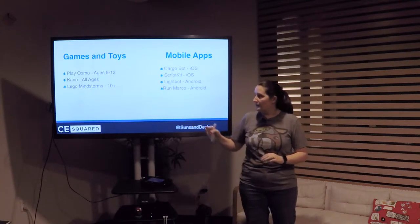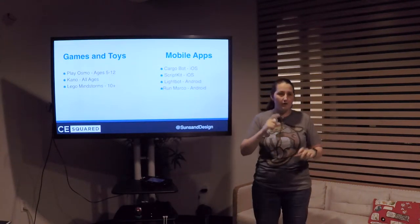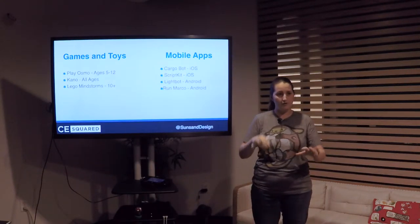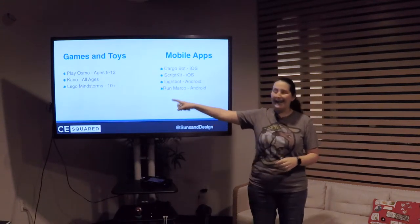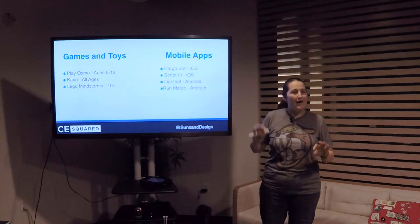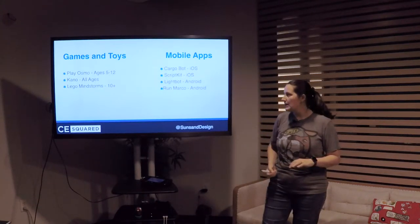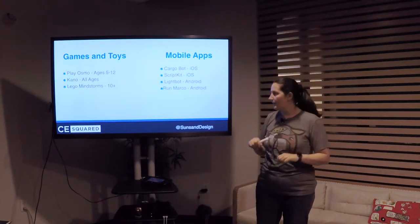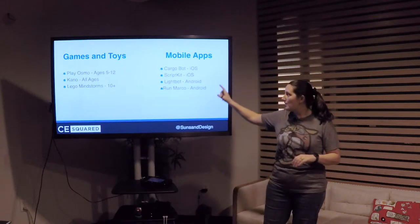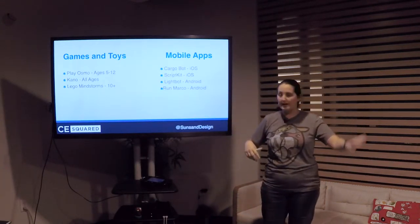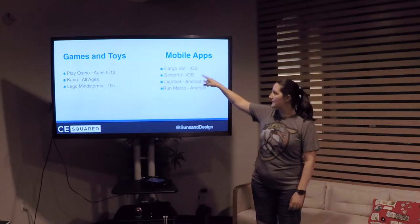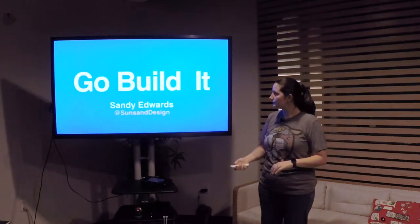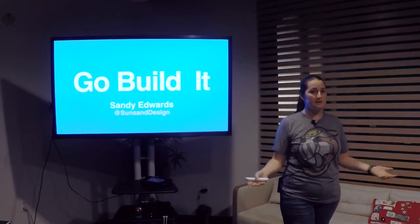There are also games and toys for all different ages. Play Osmo connects to an iPad and you program a little bot to move on a game board. Kano is like a Raspberry Pi but easier to use for kids. Lego Mindstorms is robotics you can program, recommended for age 10+. There are also mobile apps — a couple for iOS and a couple for Android that function similarly. The biggest thing is: get with your kids and go build something.